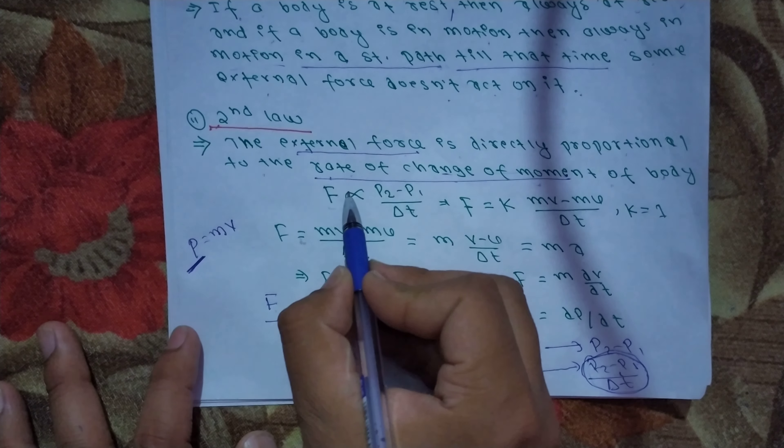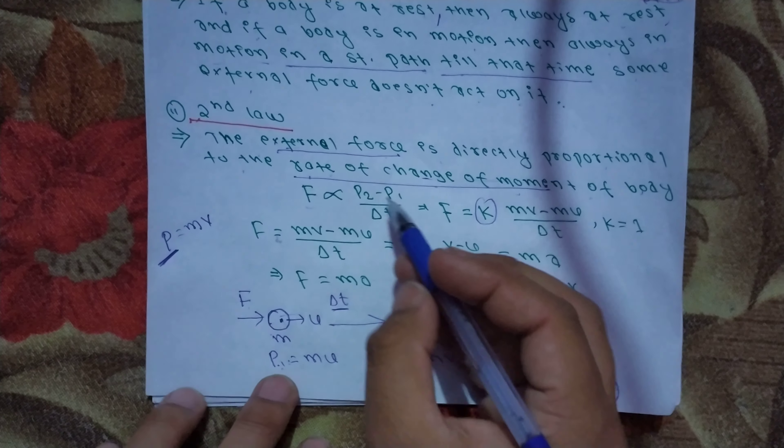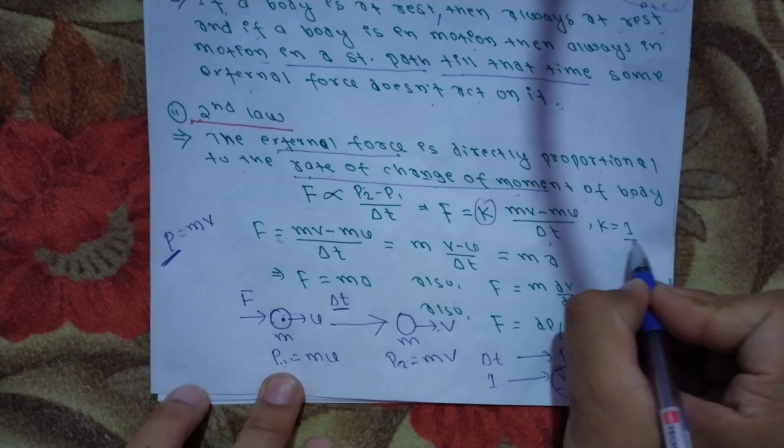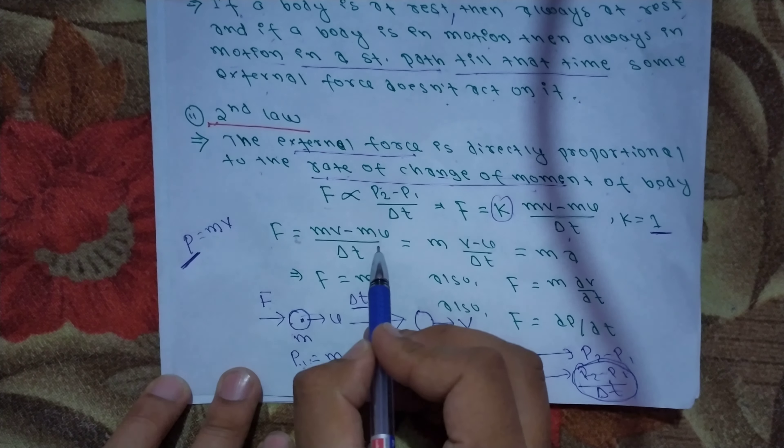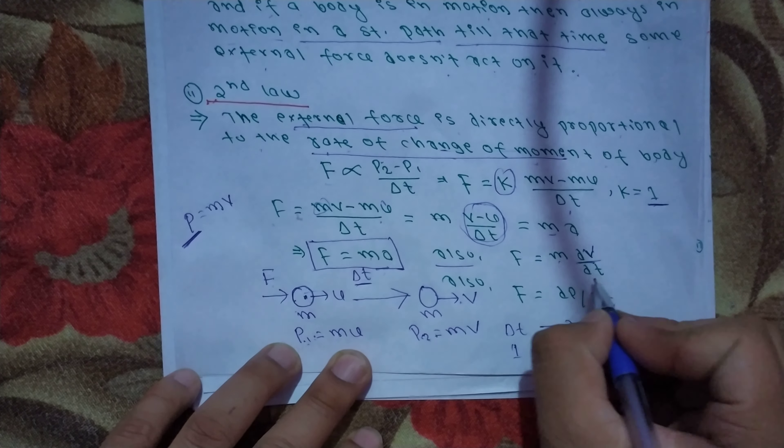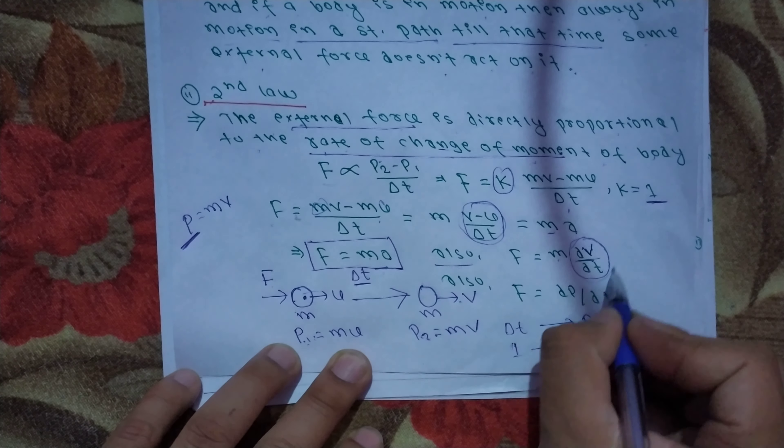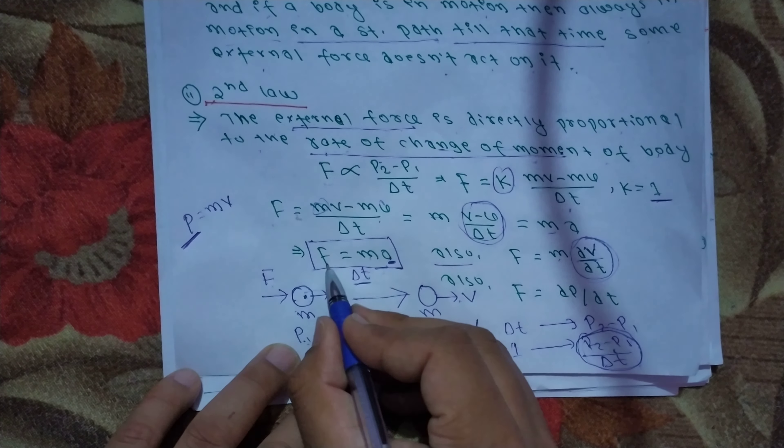Removing the proportionality sign and adding a constant, we get F equals (mv - mu) over delta t. Mass is common, so F equals m(v - u) over delta t. This is acceleration. Therefore F equals ma. In calculus form, F equals m times dv/dt, where dv/dt is the instantaneous rate of change of velocity, which is acceleration.